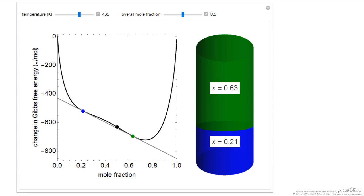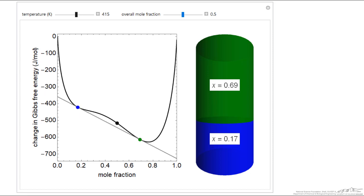The mole fractions of these two phases correspond to the blue dot and the green dot. If the temperature decreases further, it becomes even more noticeable.